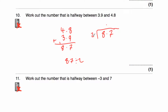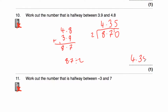Put our decimal point above. 2 goes into 8 four times. 2 goes into 7 three times remainder 1, so that's 3. Then put a 0 and carry remainder 1 — 2 goes into 10 five times. So 8.7 divided by 2 is 4.35. The midpoint of 3.9 and 4.8 is 4.35. We find that by adding the two numbers together and dividing by 2.